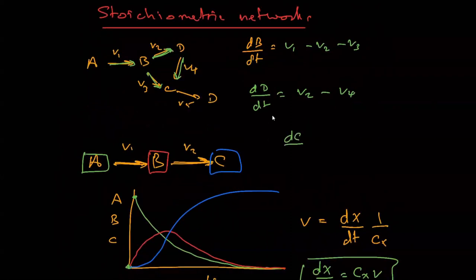And then finally, for C, DC by DT, we're coming in at V3. We're also coming in at V4, so it's a plus, but we're disappearing at V5.